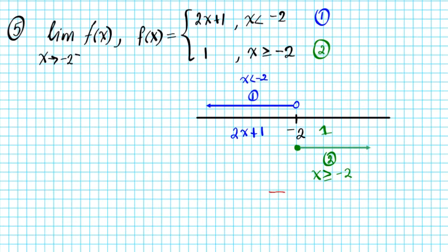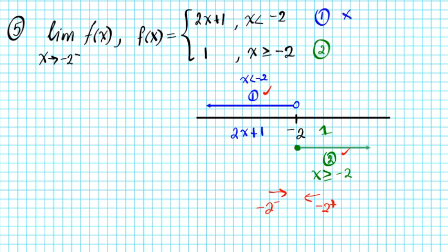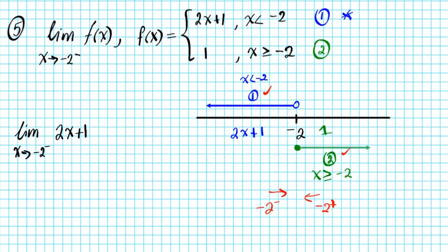When approaching negative two from the left, we use function one. When approaching from the right, we use function two. Since this problem approaches negative two from the left, we use function one. The problem becomes the limit as x approaches negative two from the left of 2x plus one.